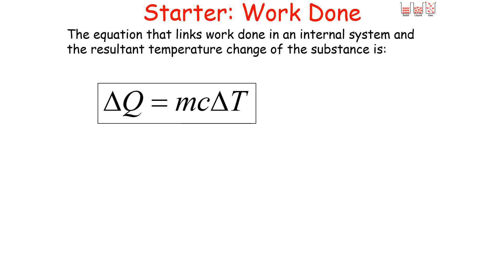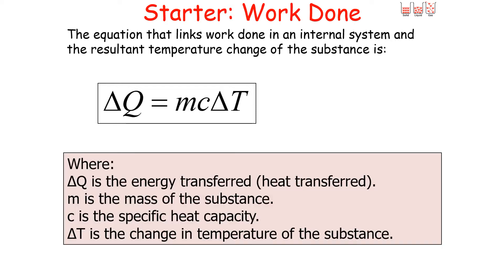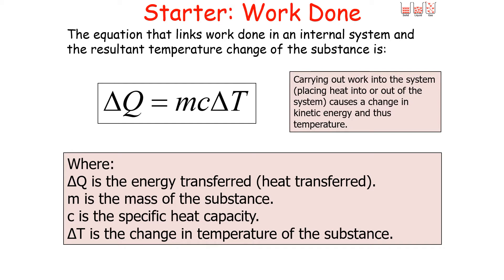The equation that links work done in an internal system and the resulting temperature change of the substance is ΔQ = mcΔT, where ΔQ is the heat energy transferred, m is the mass of the substance, c is the specific heat capacity, and ΔT is the change in temperature. Carrying out work into the system, either placing heat into or out of the system, can cause a change in the kinetic energy store of the object's internal energy and thus a change in temperature.